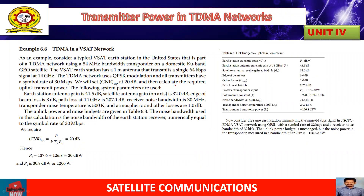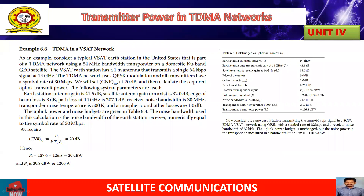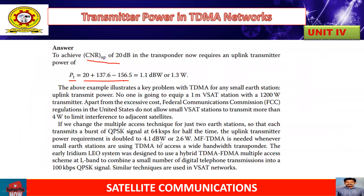So to achieve a CNR of 20 dB in the transponder, the uplink transmitted power value is given by 20 plus 137 minus 156.5, which equals 1.3 watts. So the total transmitted power for this setup is 1.3 watts. In this way, simple problems might be asked in some examinations.